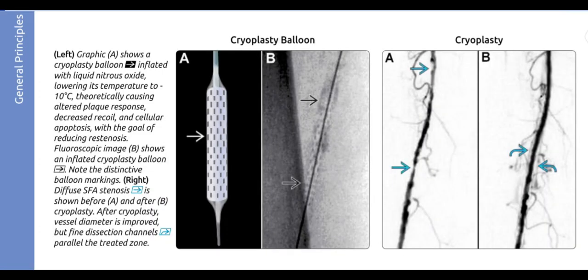A cryoplasty balloon is inflated with liquid nitrous oxide, lowering its temperature to 10 degrees Celsius, theoretically causing altered plaque response, decreased recoil, and cellular apoptosis with the goal of reducing restenosis. A fluoroscopic image shows an inflated cryoplasty balloon with distinctive balloon markings. Diffuse SFA stenosis is shown before and after cryoplasty; after cryoplasty, vessel diameter is improved but fine dissection channels parallel the treated zone.